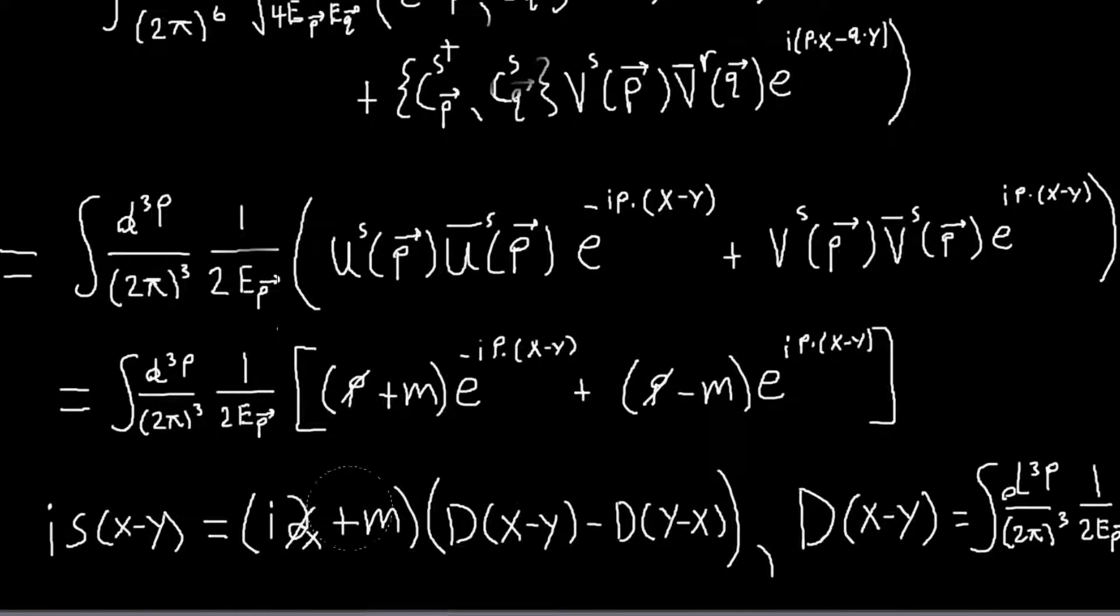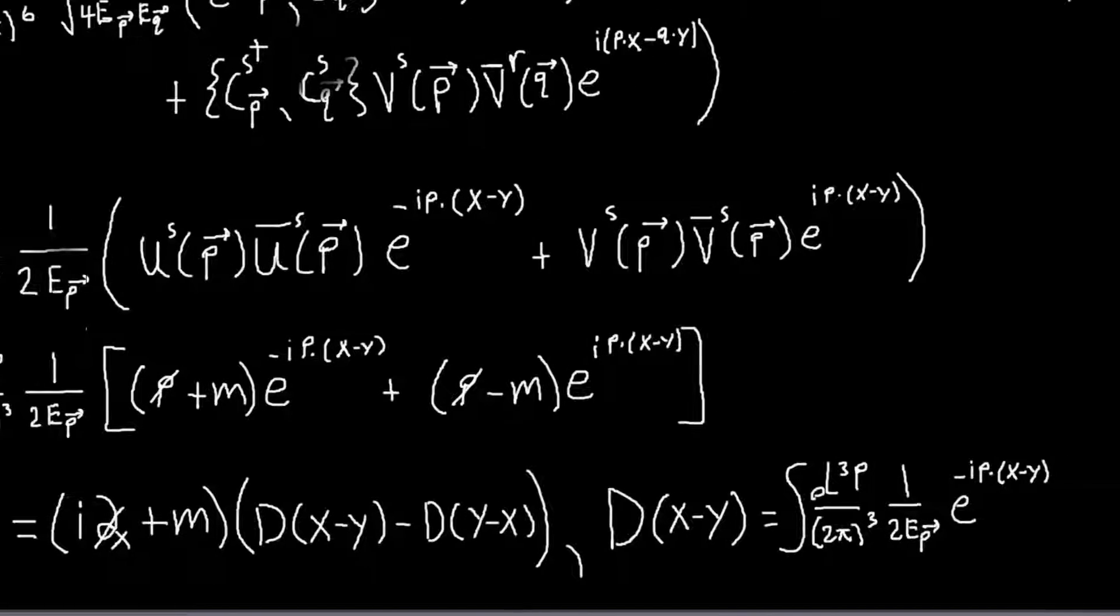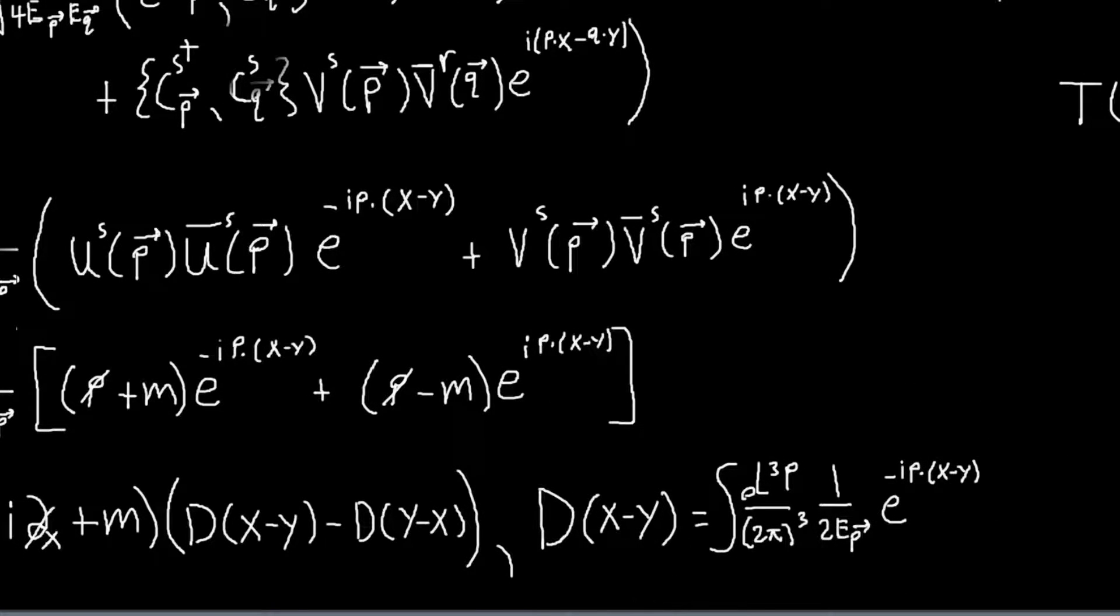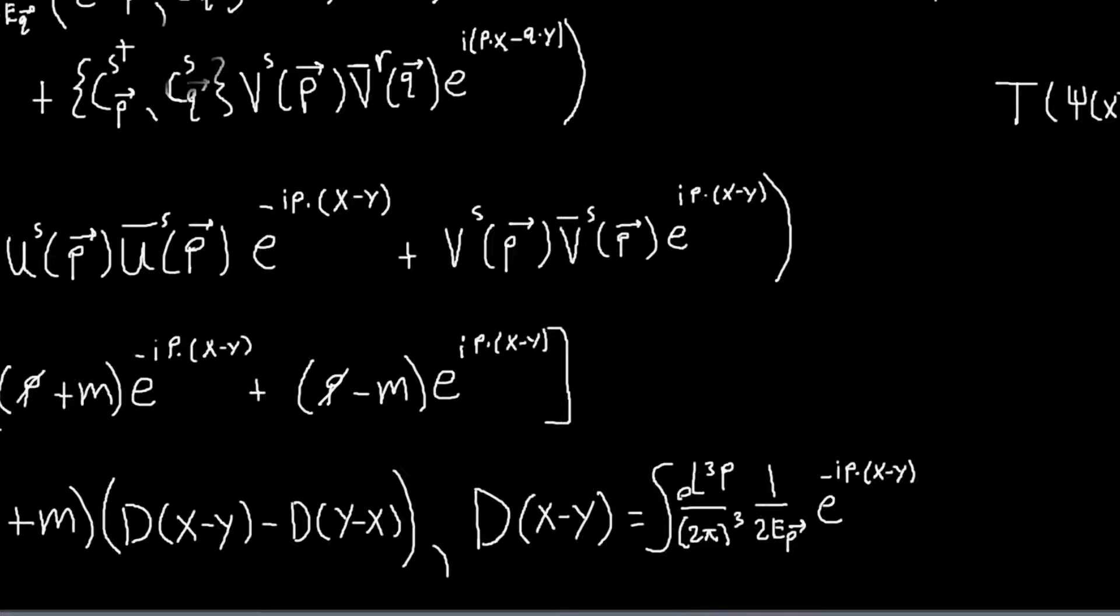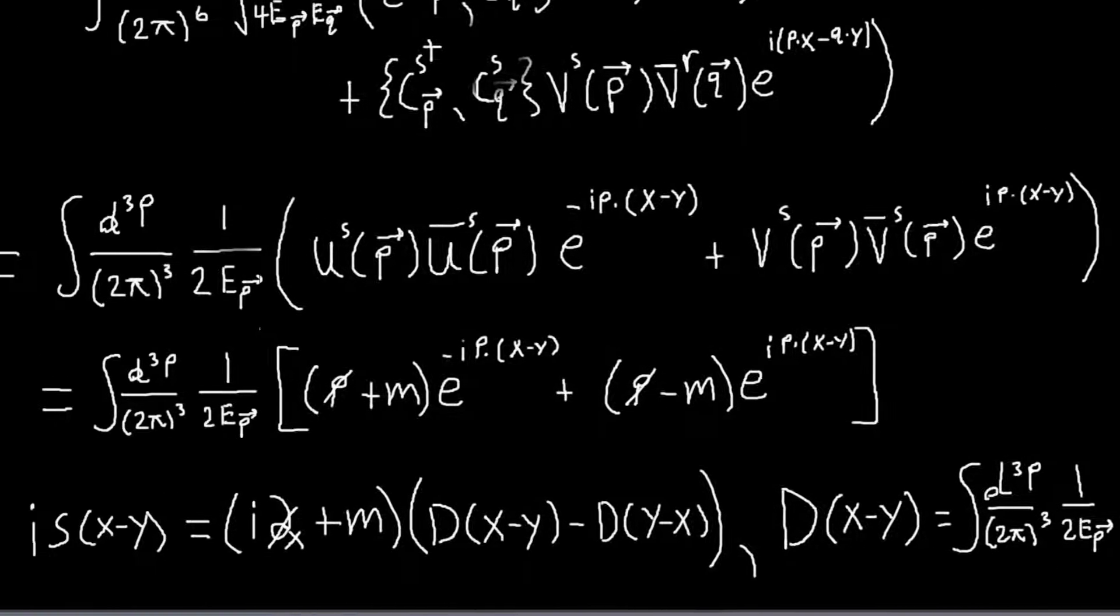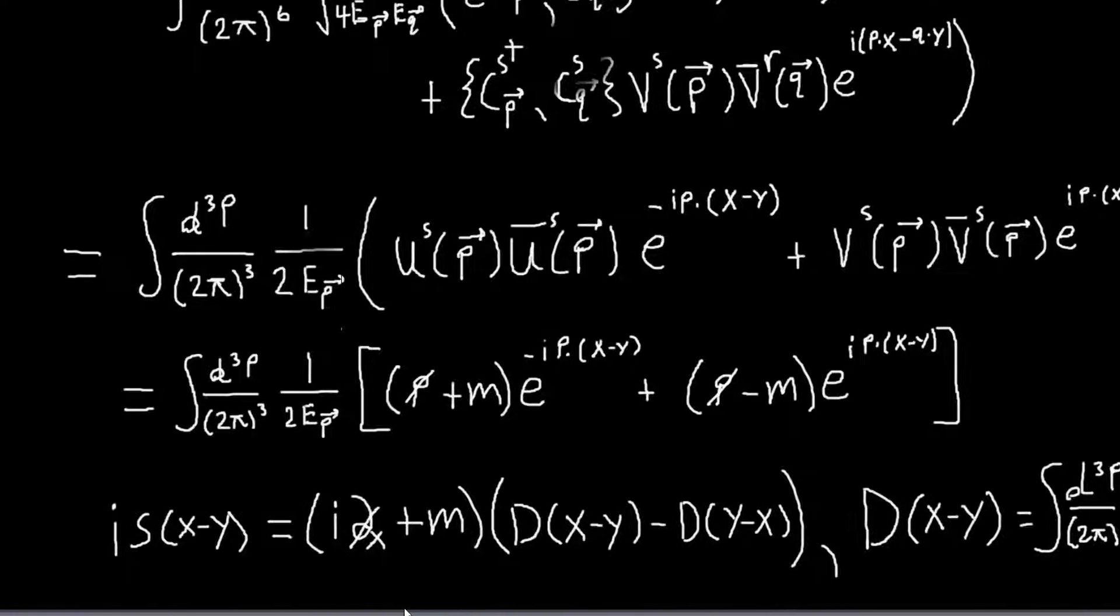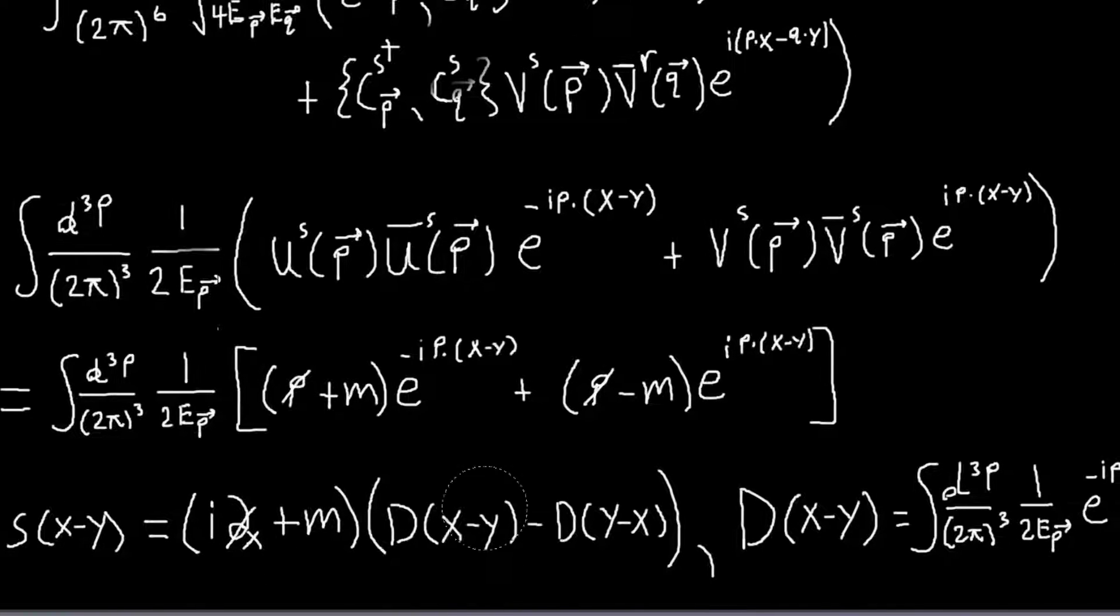which is a similar kind of expression we got for the propagator—oh, sorry, and then D of X minus Y is this term. And we saw this same exact term pop up for the real scalar field, and so in there the propagator was just this—it was just this thing, basically, there wasn't this operator here.